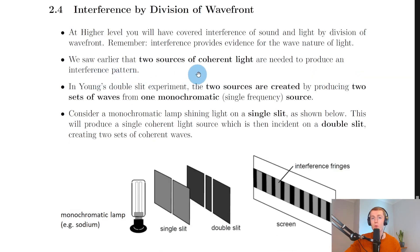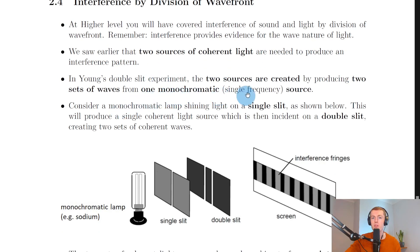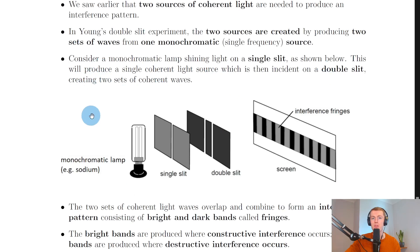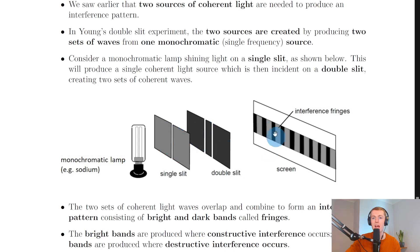We saw earlier that two sources of coherent light are needed to produce an interference pattern. In Young's double slit experiment the two sources are created by producing two sets of waves from one monochromatic, i.e. single frequency, source. Consider a monochromatic lamp shining light on a single slit — so there's your monochromatic lamp, which is sodium in this example, and we've got a single slit followed by a double slit and then a screen.